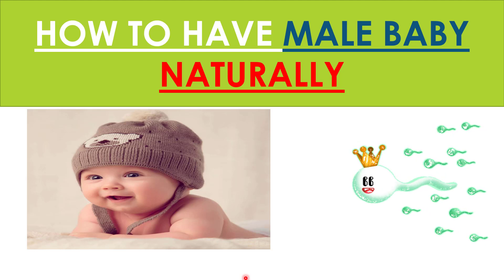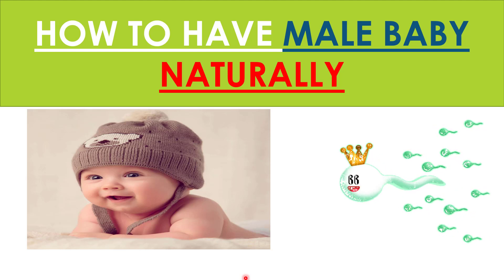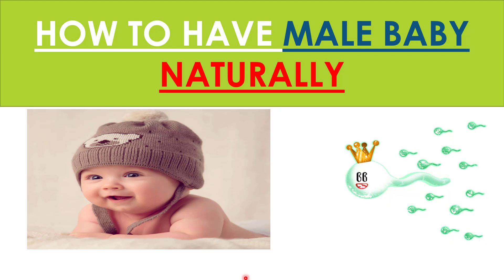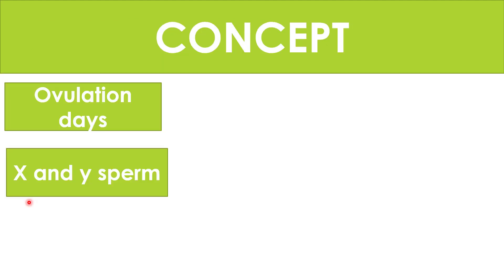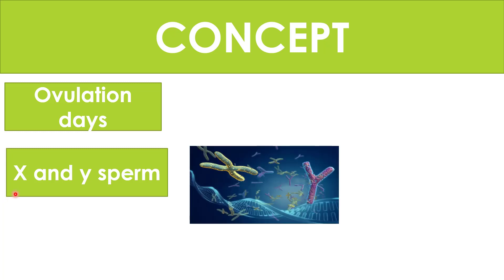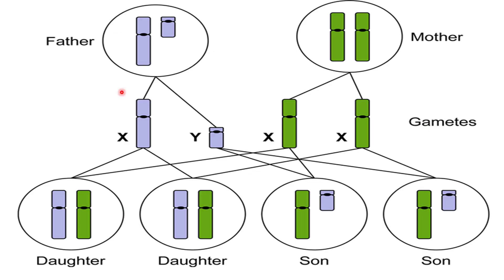Assalamu alaikum everyone, welcome to my YouTube channel. Today in this video we will talk about how you can have a male baby naturally. For this you must know about your ovulation days and the concept that sex chromosomes in males consist of X chromosomes and Y chromosomes, so males have X sperms and Y sperms.